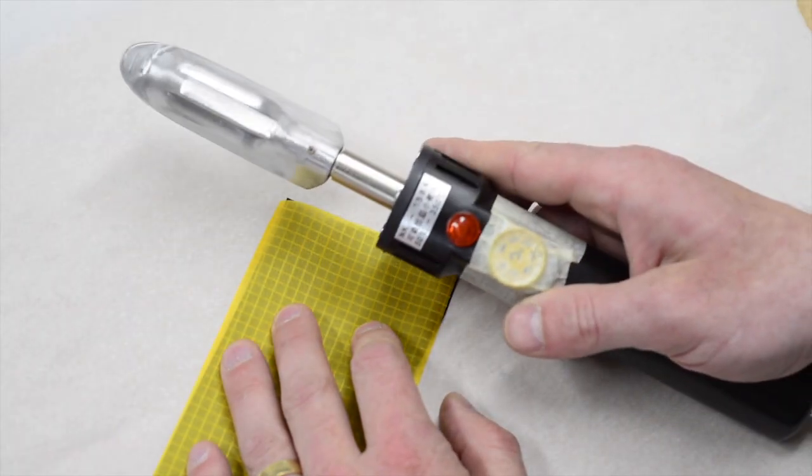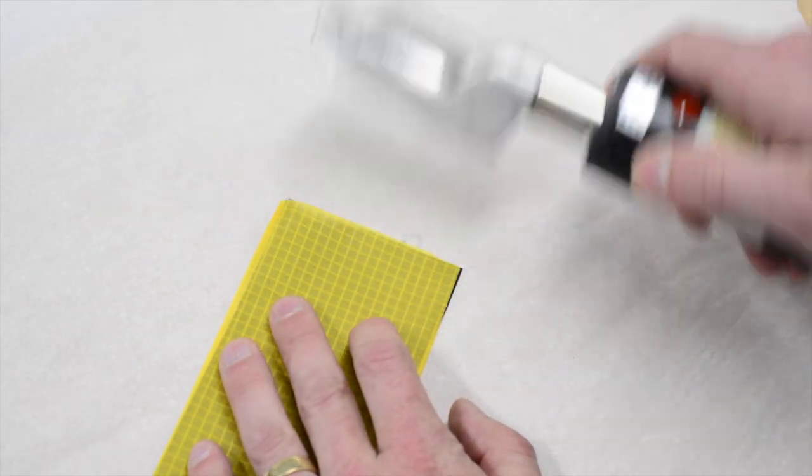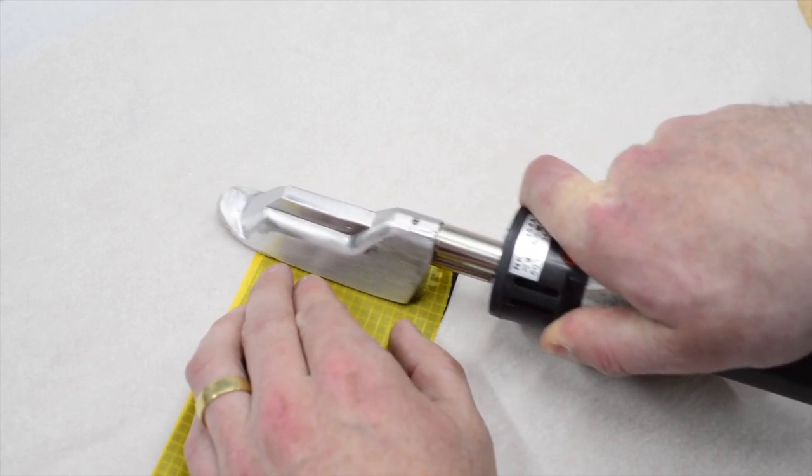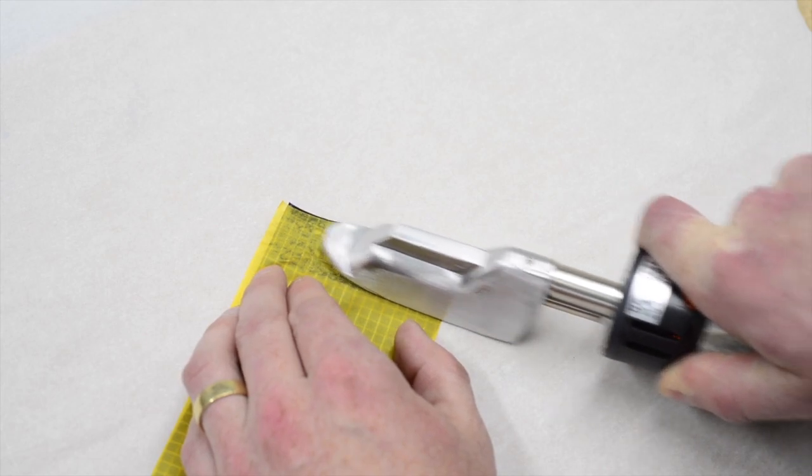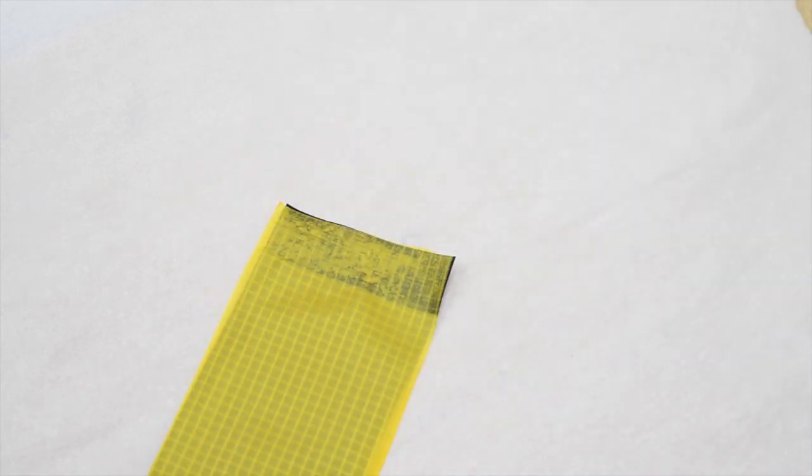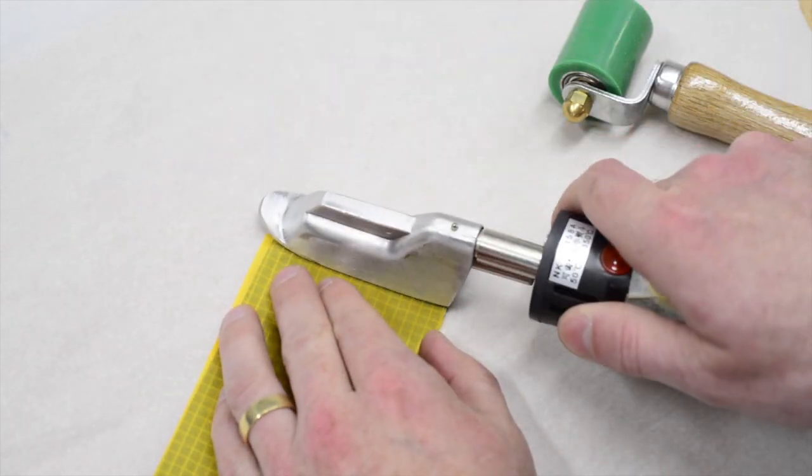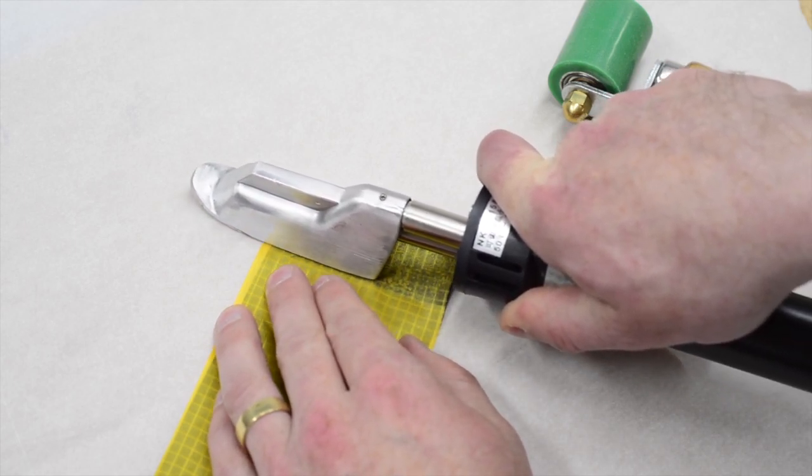Let's start with the lightweight fabrics used in the ultralight DIY packraft kits. The yellow fabric is used to make the packraft's tubes and it's coated with heat sealable TPU on one side, and the black fabric is used to make the packraft's floor and it's coated on both sides.